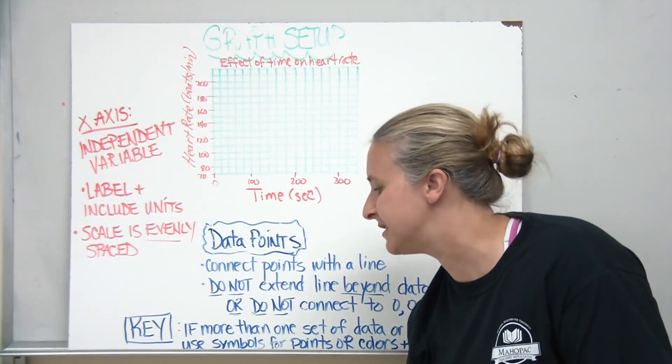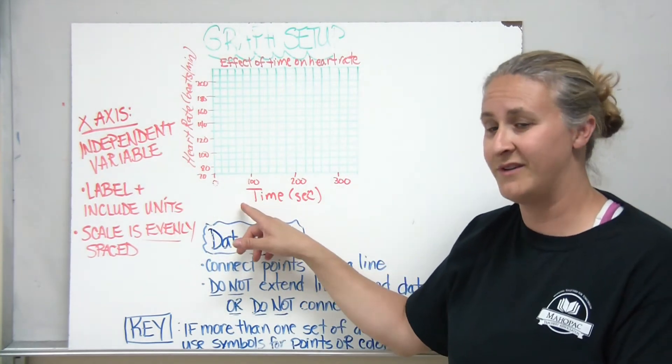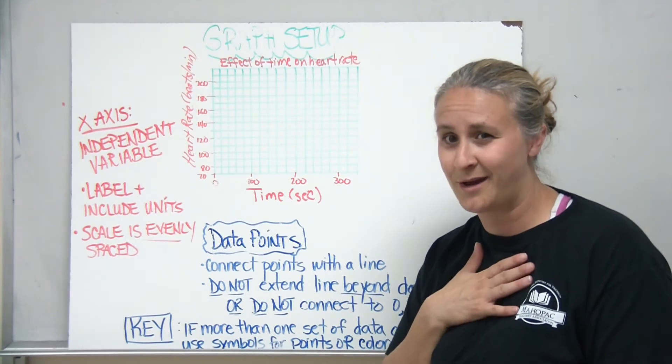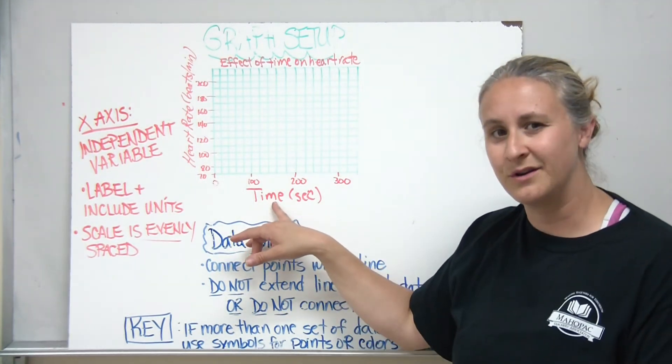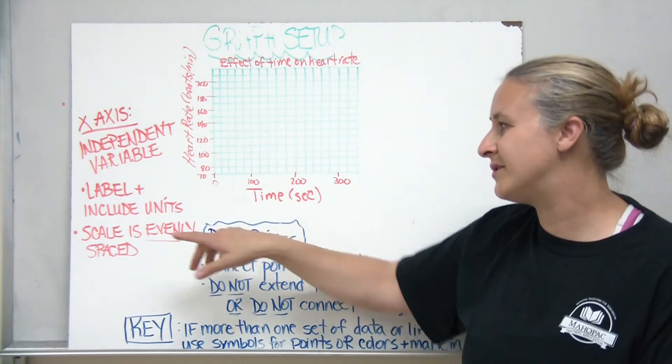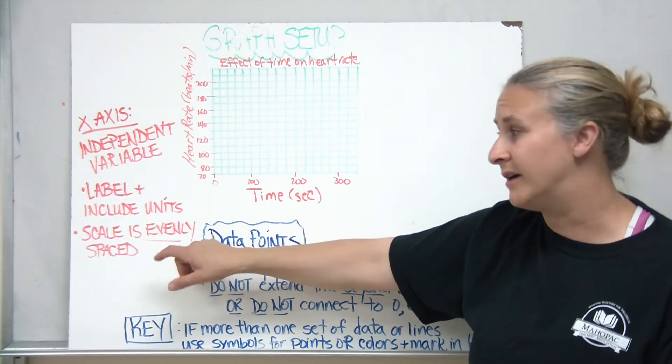As far as the x-axis goes, the x-axis is going to have my independent variable. So my independent variable, remember that was the one that I set up ahead of time, in this case is going to be time. So I'm going to put my time on my x-axis and I have to do the same things. I need to label and include units and I need to have an evenly spaced scale.